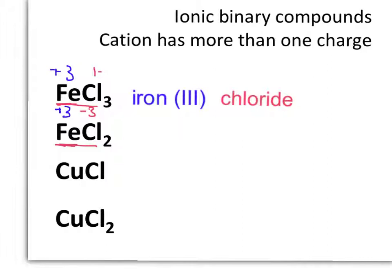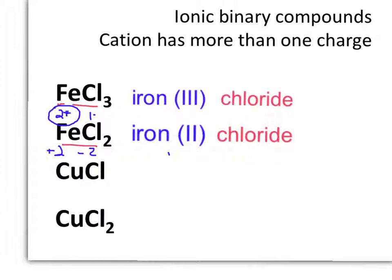The name of the second compound cannot also be iron(III) chloride. Since chloride is always negative one and there are two of them for a total charge of minus two, this particular iron must have a charge of two plus. So the second compound is iron Roman numeral II. One of the most common mistakes students make is to think that the Roman numeral has something to do with how many irons or chlorides are in the formula — but the Roman numeral has everything to do with the charge of the cation.